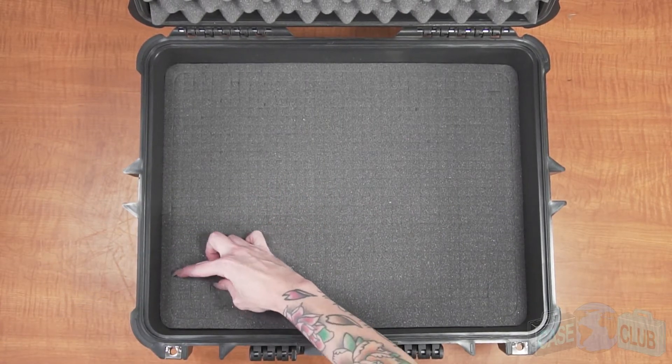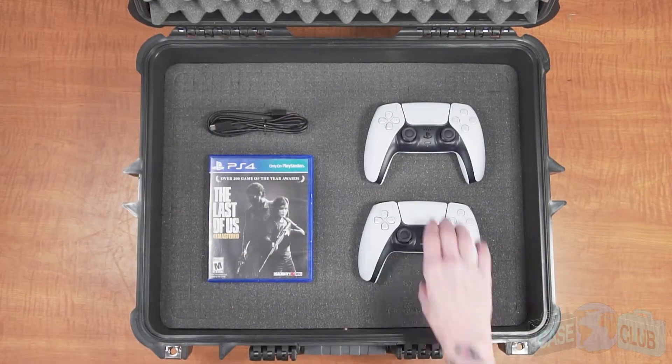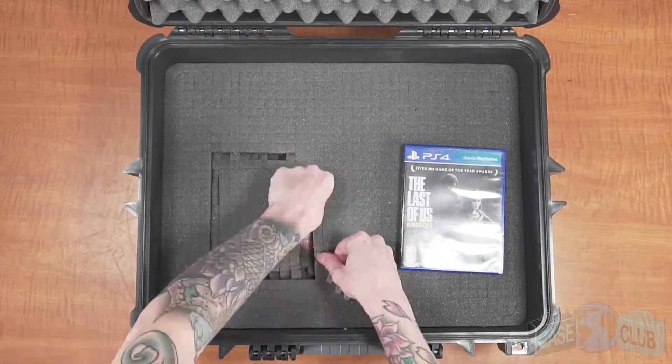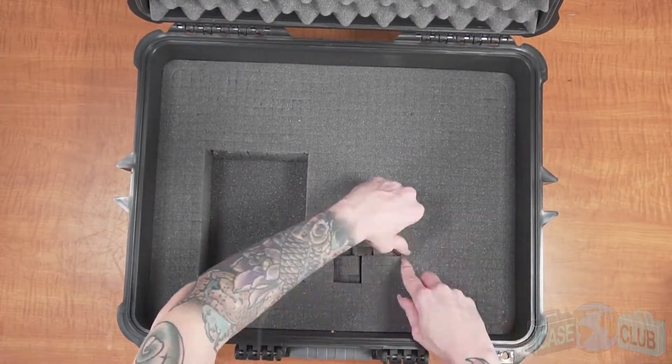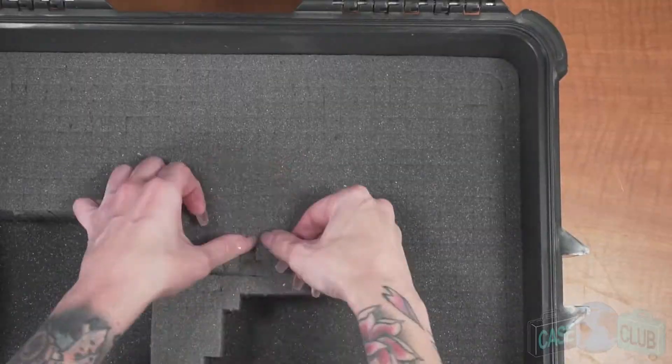I would start with the bottom layer, which will be perfect for games and accessories. First, lay out your items on the foam to figure out what configuration you want. Once you're satisfied with the layout, start at one corner of the first item and gently separate the foam to start making your line. The perforations are sturdy enough to retain their shape if left intact, but can easily be separated as well.